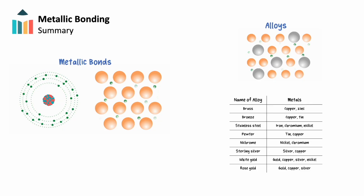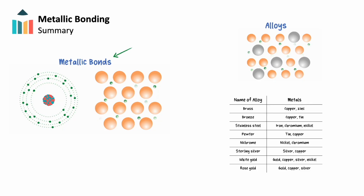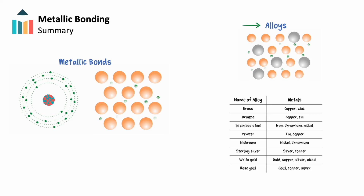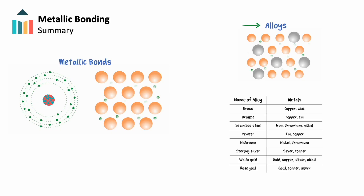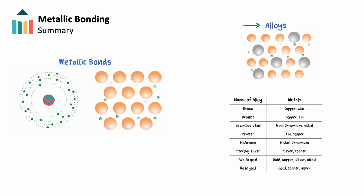In summary, metallic bonding is unique with its sea of delocalized electrons that allow metals to conduct electricity while also being malleable and workable. We can mix metals together to form alloys, which can enhance a metal's characteristics. It's because of these characteristics that we see metals play a vital role throughout the history of humankind, with advances in our understanding of metals corresponding with our technological and industrial leaps as a society.